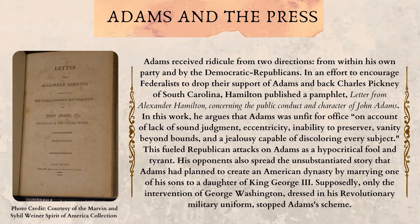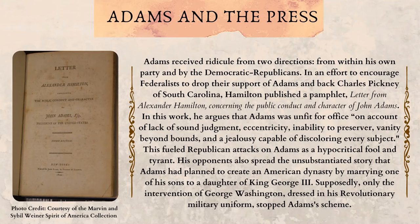Adams and the Press. Adams received ridicule from two directions: from within his own party and by the Democratic Republicans. In an effort to encourage Federalists to drop their support of Adams and back Charles Pinckney of South Carolina, Hamilton published a pamphlet, Letter from Alexander Hamilton concerning the public conduct and character of John Adams. In this work, he argues that Adams was unfit for office on account of lack of sound judgment, eccentricity, inability to persevere, vanity beyond bounds, and a jealousy capable of discoloring every subject. This fueled Republican attacks on Adams as a hypocritical fool and tyrant. His opponents also spread the unsubstantiated story that Adams had planned to create an American dynasty by marrying one of his sons to a daughter of King George III. Supposedly, only the intervention of George Washington, dressed in his revolutionary military uniform, stopped Adams' scheme.